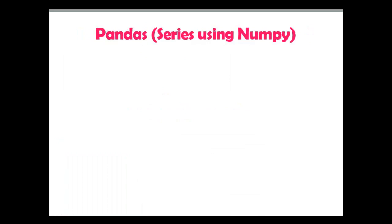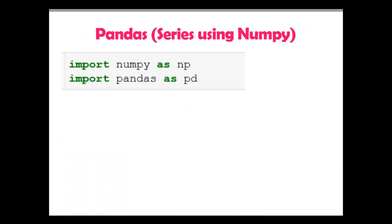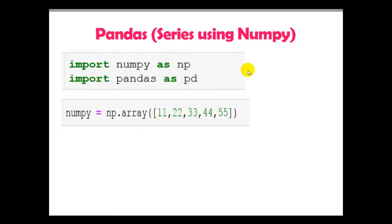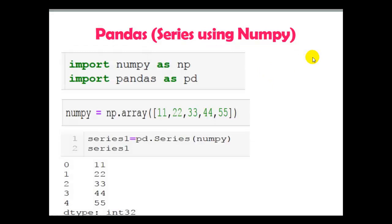Pandas series using numpy. Here numpy as np and pandas as pd are imported. I have created a 1D array with 5 elements: 11, 22, 33, 44 and 55. Passing this numpy variable to the Series method of pandas, the pandas series is created and indexes are created automatically by pandas.